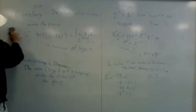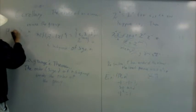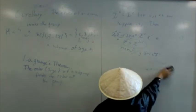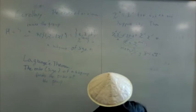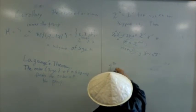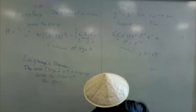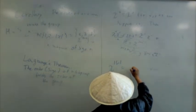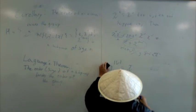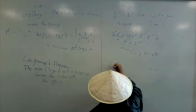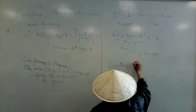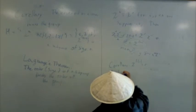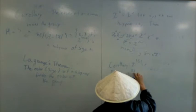Last part. So, notice x to the order of the group g is equal to e. This is actually important corollary. x to the order of the group equals e. Very simple. x^|g| equals e.